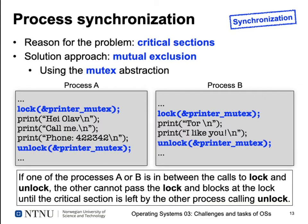These three lines for process A and two lines for process B belong together and must be executed without being interrupted by something else trying to do the same thing. A sequence of code that needs to be executed without interruption is called a critical section. We need to protect this critical section so no other process can execute its own critical section when one is already executing. This solution approach is called mutual exclusion — either one or the other process can be in its critical section, but not both at the same time.